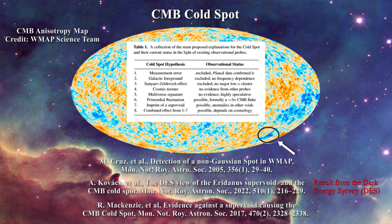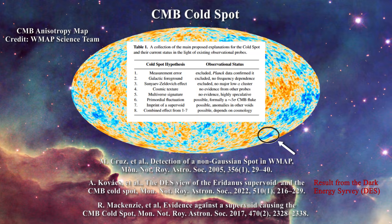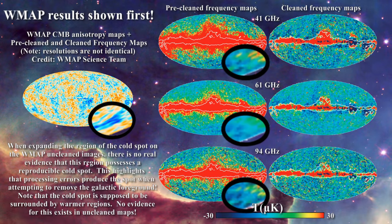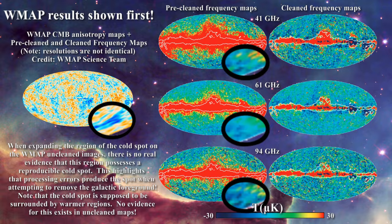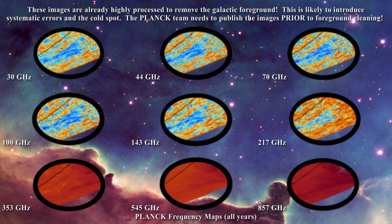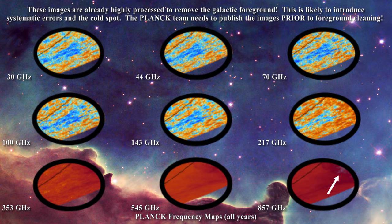Kovacs et al. contend that the cold spot could not be attributed to the galactic foreground because there is no frequency dependence in the Planck channel maps. Let us have a look at the Planck maps for each channel in this region. At low frequency, much of the galaxy has already been processed away, as we saw when comparing cleaned and uncleaned maps from the WMAP satellite. In reality, the lowest frequency maps of the Planck satellite are polluted by remnants from attempting to minimize the effects of the galaxy. At 857 GHz, in the region immediately adjacent to the cold spot, there is a strong galactic signal. As such, a suspension of disbelief is required if one is to advance that the cold spot cannot be caused by the processing of galactic signals.